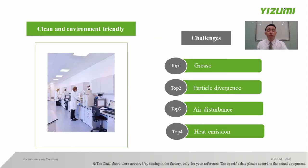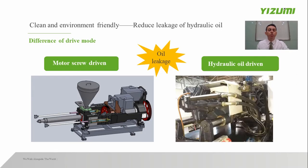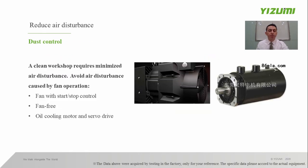Let's talk about the clean environment. There are several challenges for the clean environment: the top challenge is grease, second is particle divergence, third is air disturbance, and fourth is heat emissions. As the contact-free structure is used, the moving platen does not contact with the tie bars at all and no grease is required, so the mold opening and closing zone is a clean zone — the tie bar and moving platen are totally suspended. As the electric injection molding machine has no hydraulic oil or hydraulic cylinder oil seals, there is no risk of contamination by oil leakage. Given the special requirement of IMD, some products have to be completed in a clean workshop, so the electric injection molding machine has a significant advantage in providing a clean environment.